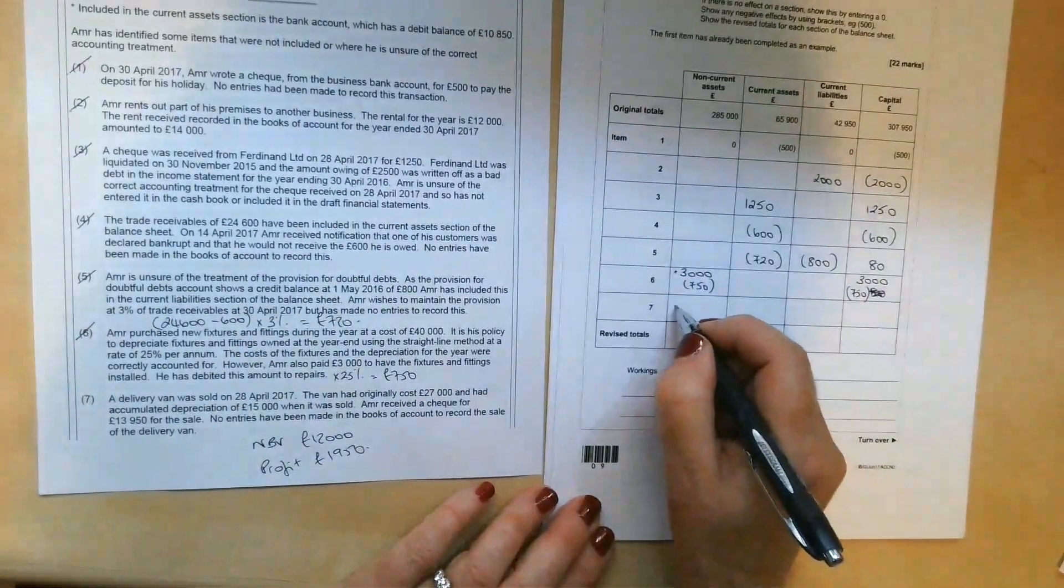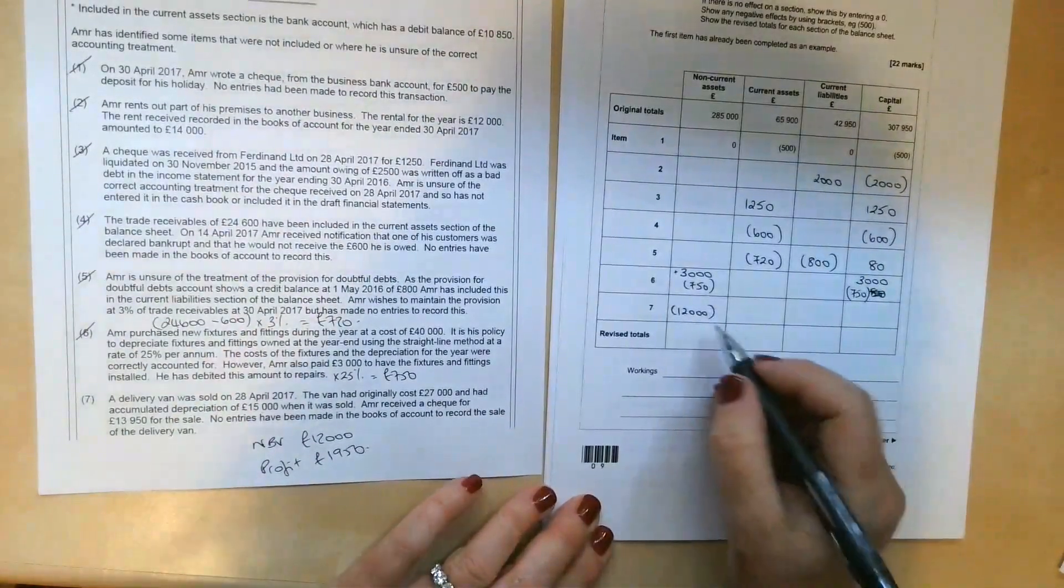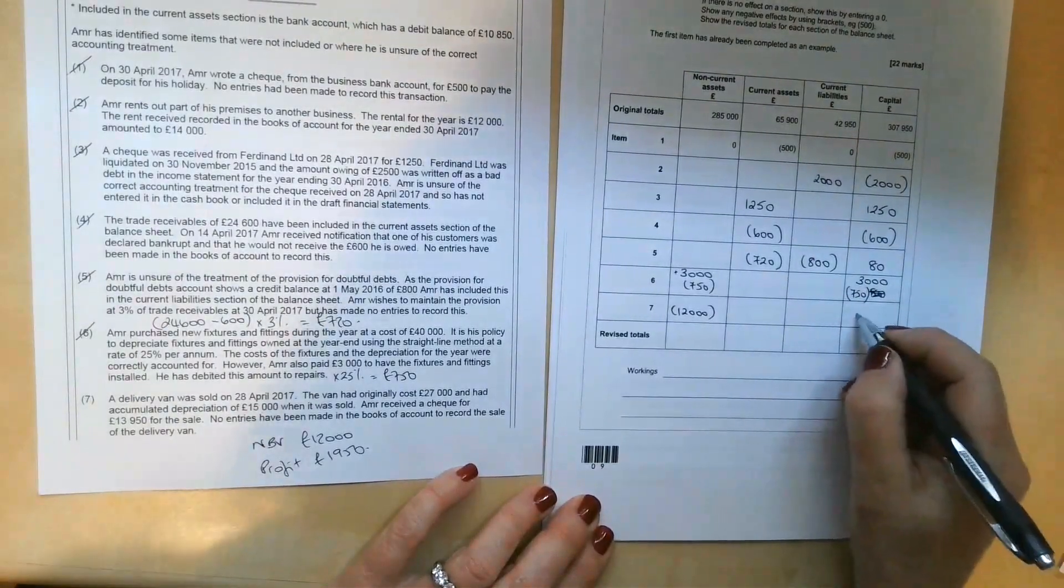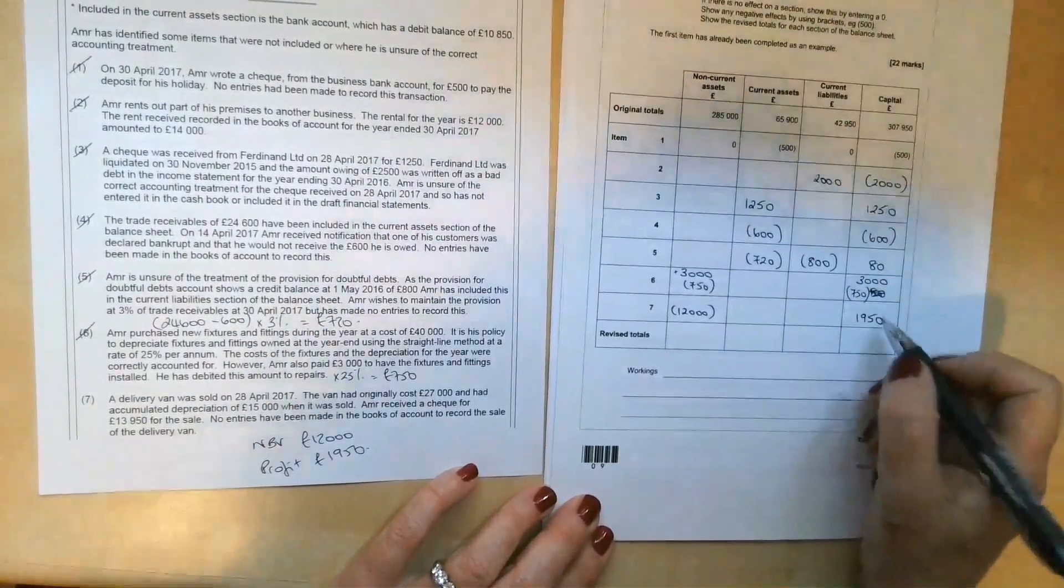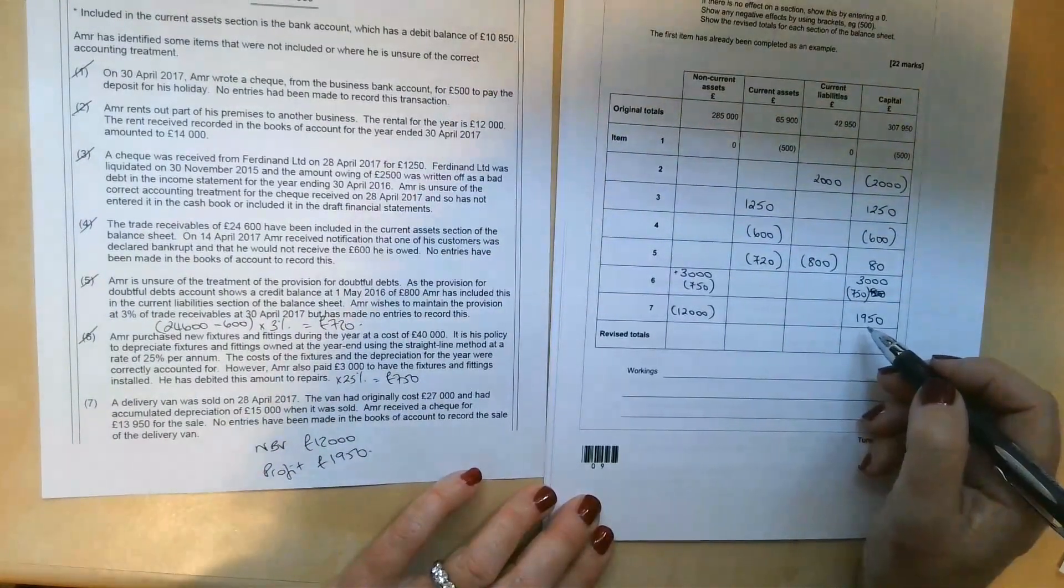Well, we need to get rid of the delivery van out of non-current assets. We're going to take £12,000 out of there. We're going to add £1,950 to the capital account, which is the profit on the disposal of that non-current asset.